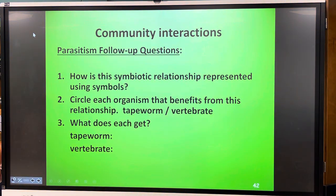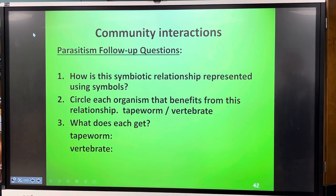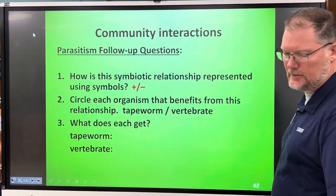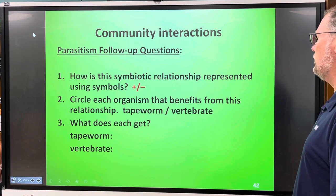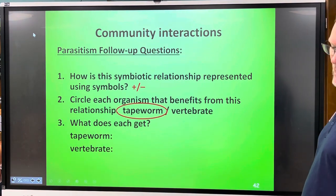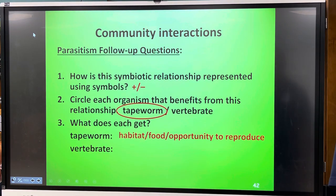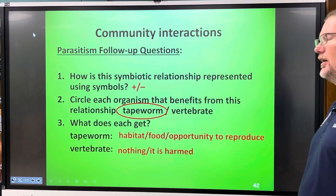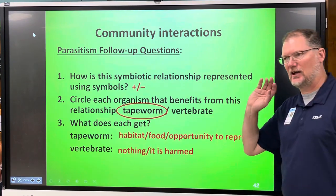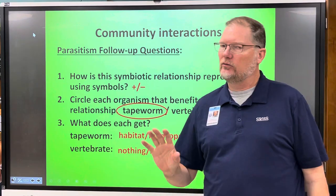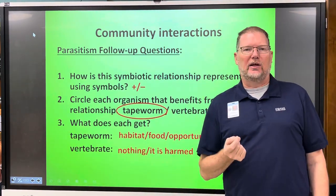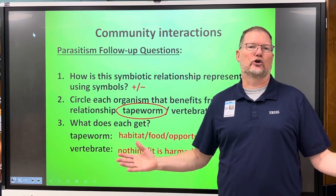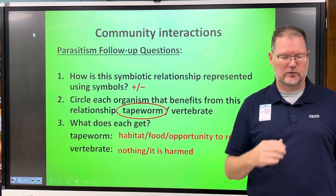What are the answers for parasitism? The symbol is plus/minus — one's benefiting and one is being harmed. Circle the organism that benefits — it's the tapeworm. What does the tapeworm get? Food and a habitat, including the opportunity to reproduce. What does the vertebrate get? It gets sick — illness, pain, and suffering. But don't panic: a simple pill will get rid of the worm and you're cured, you just have to be diagnosed first.